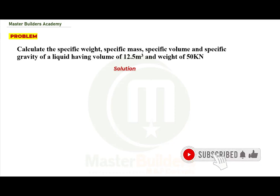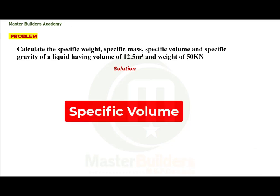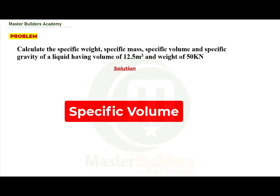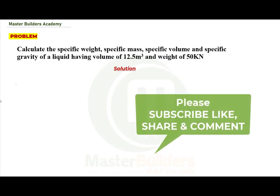Before us we have a question in fluid mechanics. We are asked to calculate four things: specific weight, specific mass, specific volume, and specific gravity of a liquid having a volume of 12.5 meter cube and a weight of 50 kilonewtons. The first thing we do with a word problem is state the given parameters — known and unknown — to help us trace the accurate formula for each unknown.